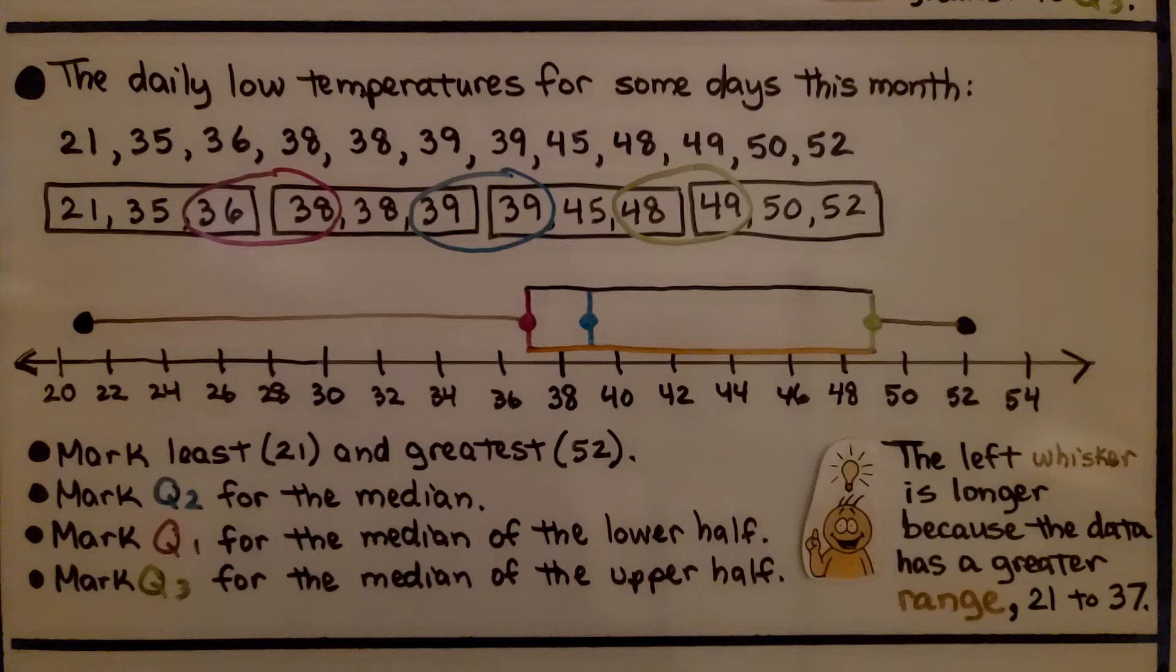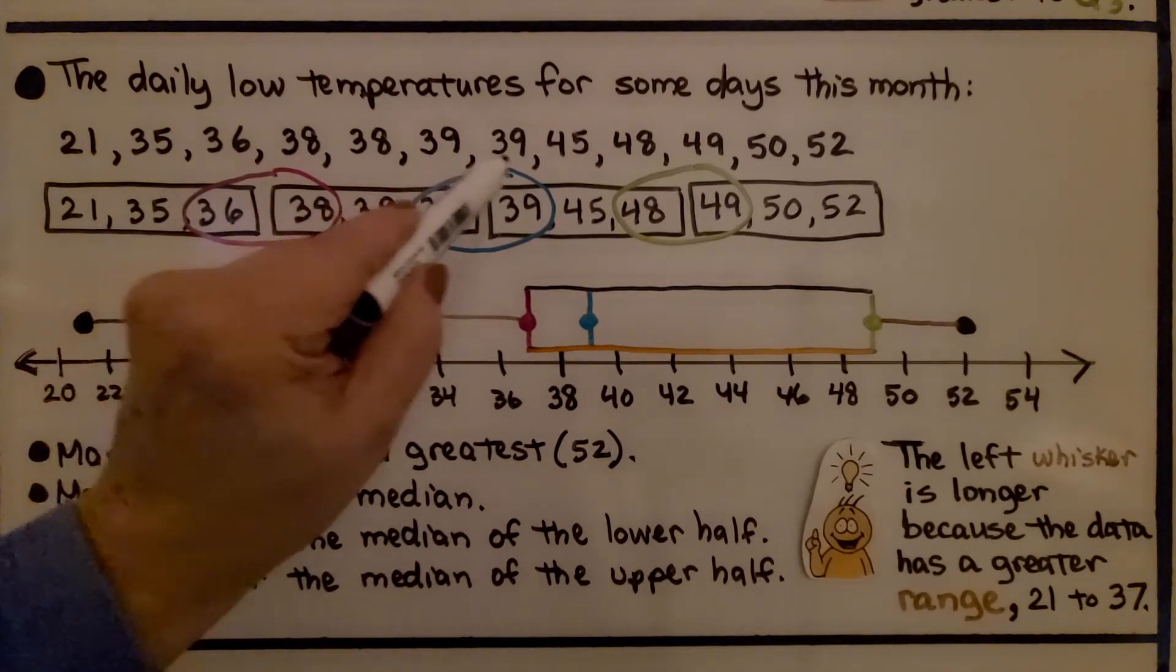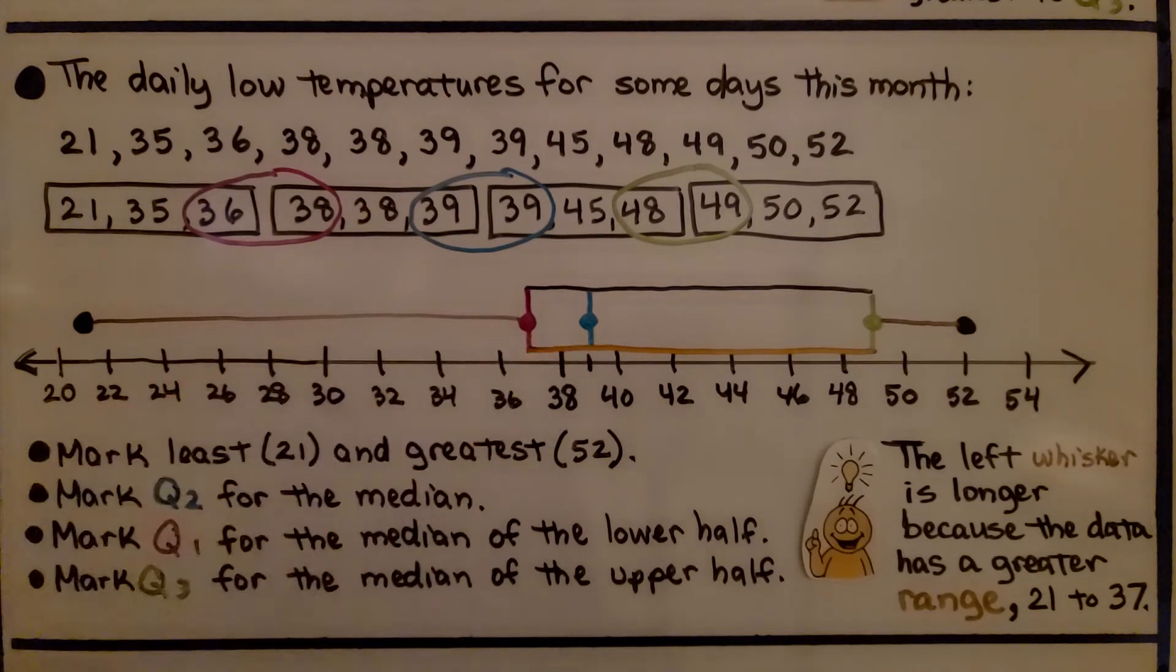Now we mark Q2 for the median. That would be, we have 39 and 39. So that's going to be 39. It's going to be right there.